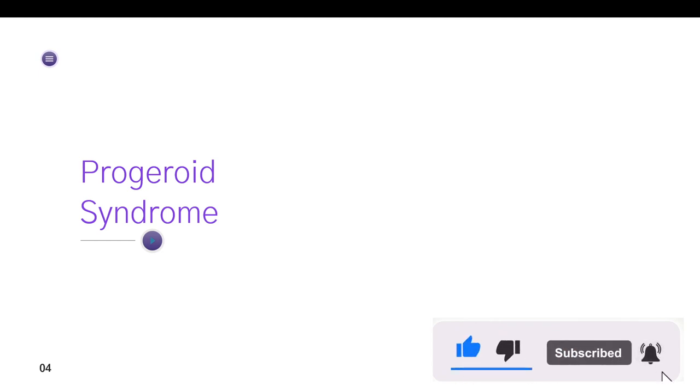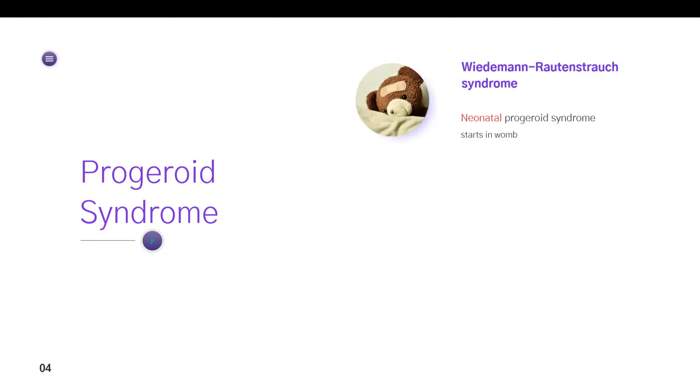The first important progeroid syndrome is Wiedemann-Rautenstrauch syndrome. Now, Wiedemann syndrome is also known as neonatal progeroid syndrome. This disease starts in womb. That is, the child is affected in its fetal stage. So when it is born, it is already affected by the disease.